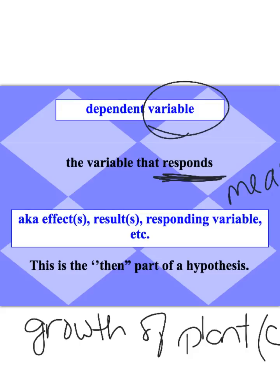It's the 'then' part of my hypothesis. If I change the substances that I'm going to water a plant with, if I water a plant with something other than plain water, then I think it will grow taller. That's my dependent variable. When I'm drawing a graph, my dependent variable is always on my y-axis. So my dependent variable is on the y, my independent is on the x.